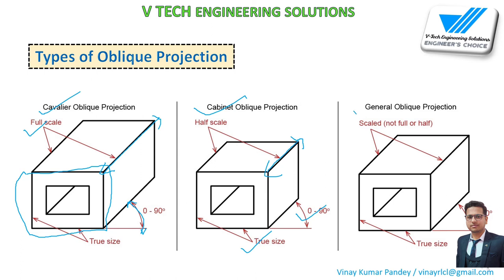General Oblique Projection: the front size is true size, the degree varies from 0 to 90 degrees, but the side and top projection length is not strictly defined. You can keep something freehand — the length can be kept variable as you choose.